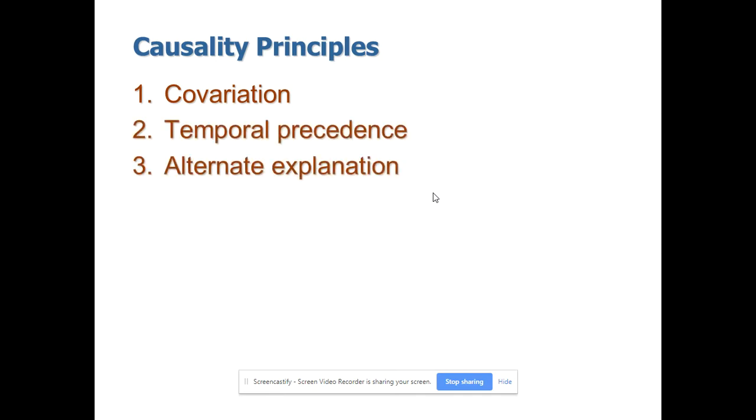Why we are using theory in our hypothesis specification process? In most of the cases, we may not be able to fulfill the causality principles or causality conditions. To establish the true cause and effect relationship, we may be conducting experimentation, that is randomized control design based experiments. In most of the cases, we may not be able to manipulate our x variable. That is the reason why we are going for non-experimental studies.